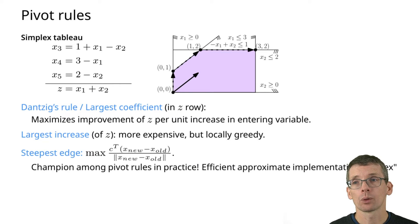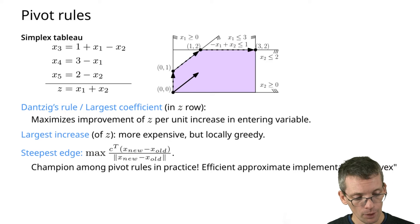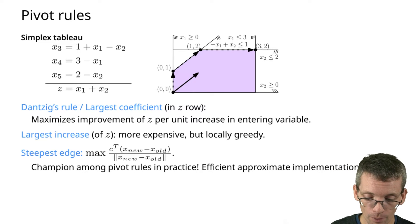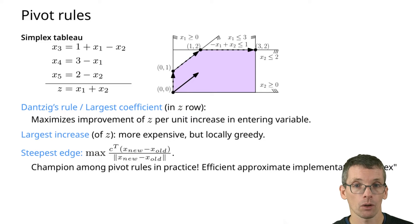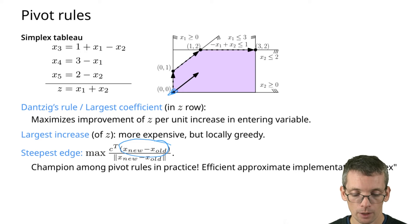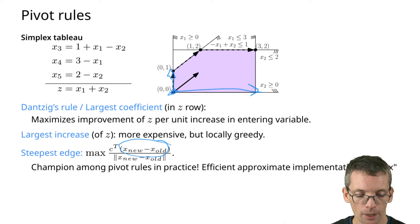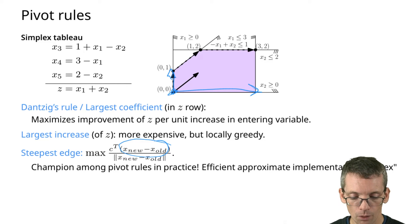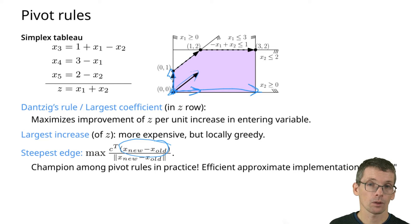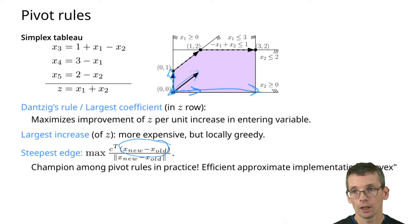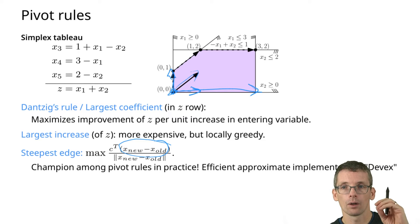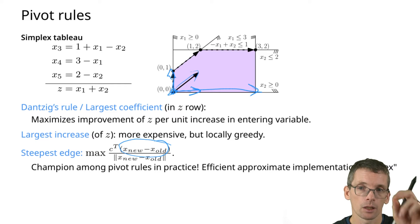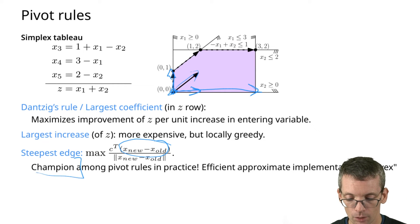Another popular rule is the steepest edge. Intuitively, we ask: if I look at the direction of change in terms of my solution, which one is most in the direction of the objective function? We look at x_new minus x0, take a unit of that change vector, and multiply by the objective — telling us how much we're going in the direction of the objective per unit of change in x. In terms of practical pivot rules, this is a great choice.